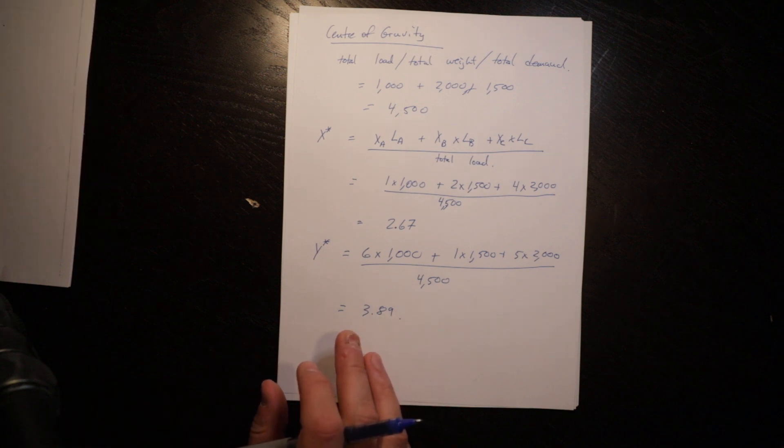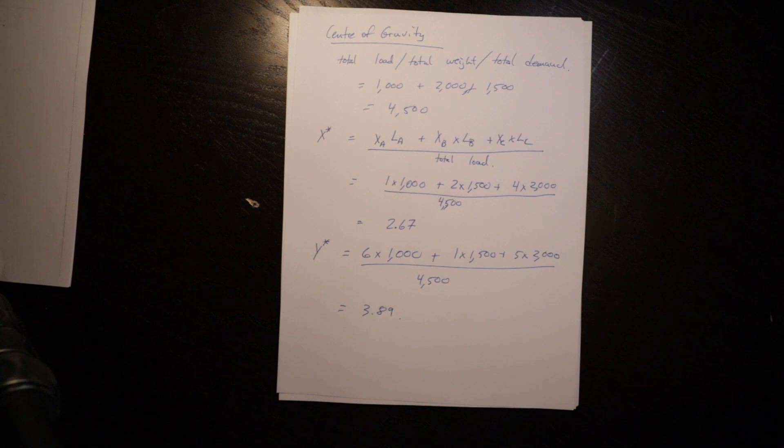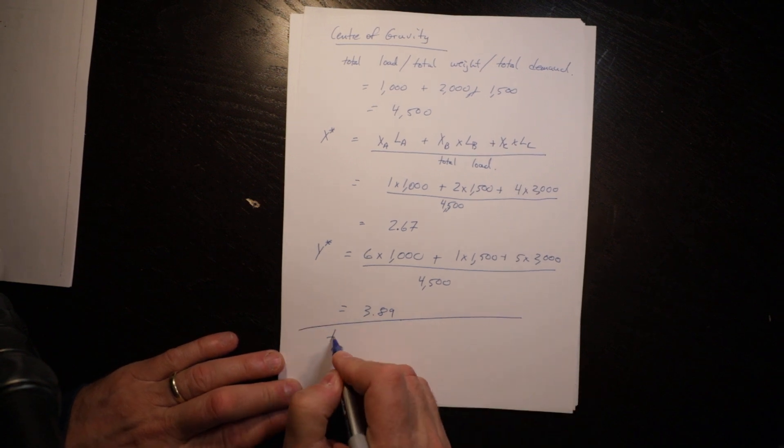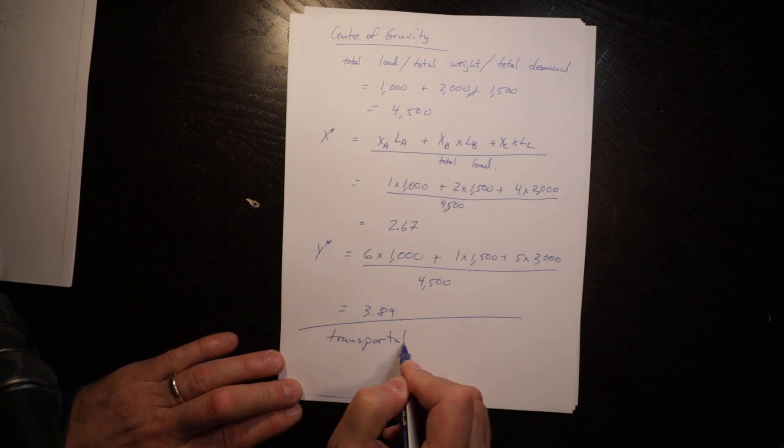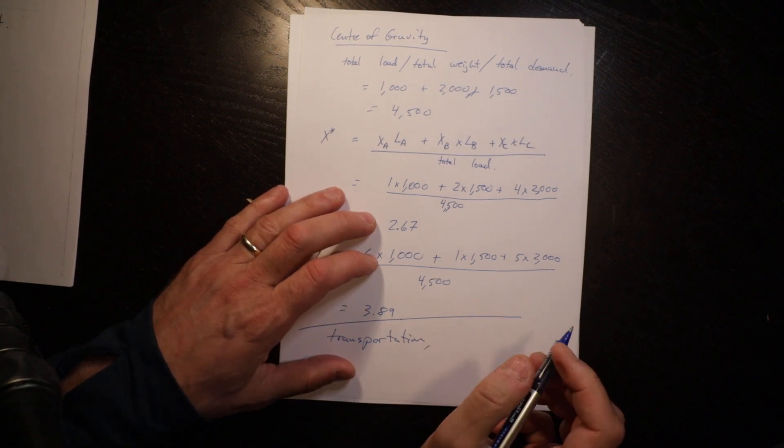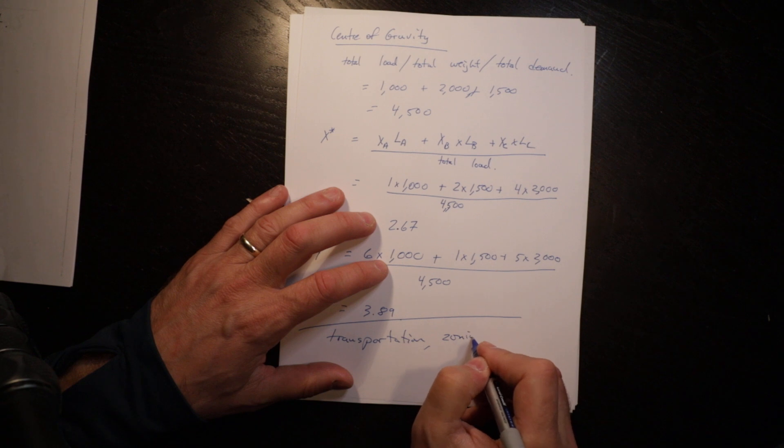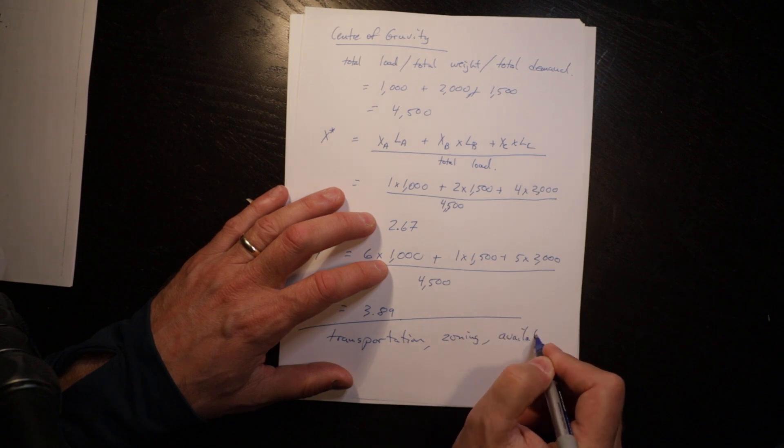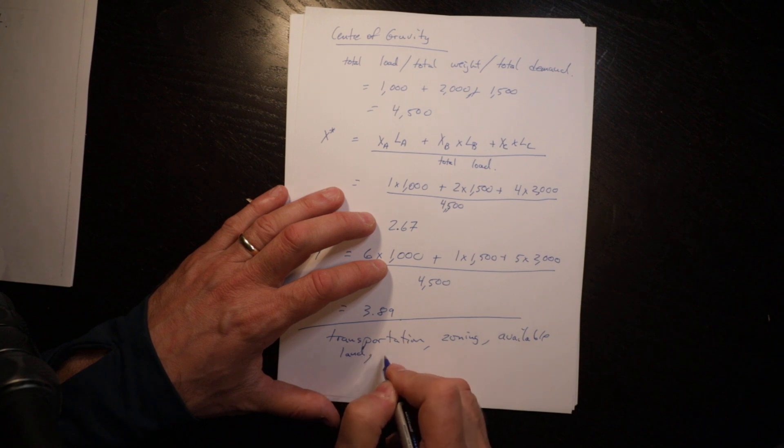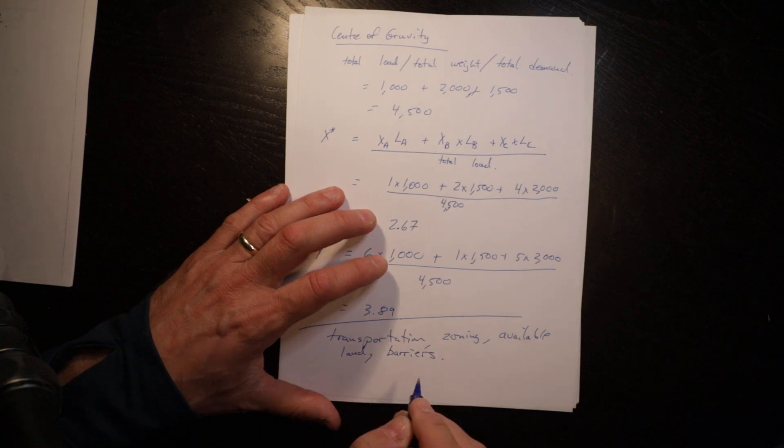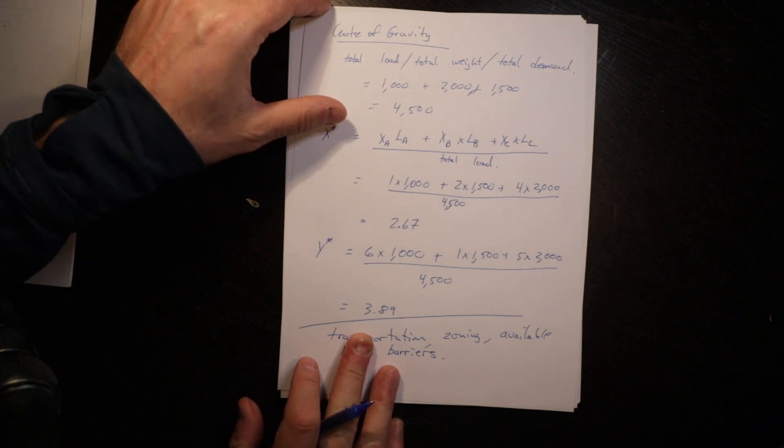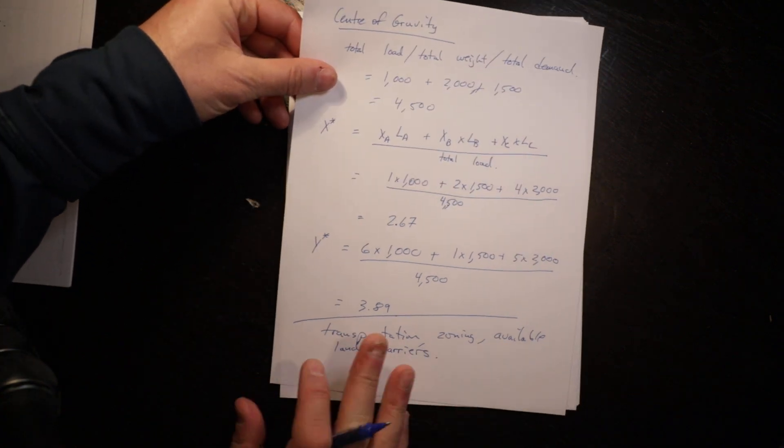If you're doing a center of gravity that will give you a sense of where to look. You still need to think about things like transportation, zoning, available land, barriers, and those sorts of things in order to choose. But the center of gravity gives you a basic starting point for that analysis, for that decision making process.